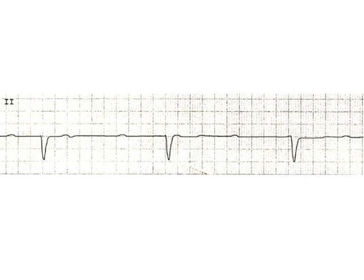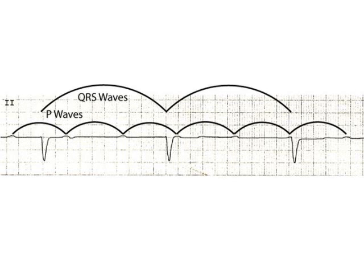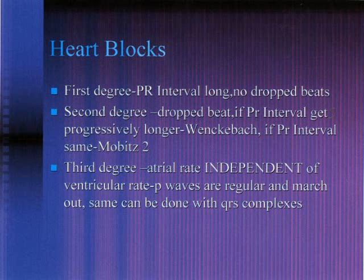The most serious block is the third degree. What happens here is the atrial rate is completely independent of the ventricular rate. As we look at the example and march out both the P waves and the QRS waves, there is no pattern between them — the P does not come in front of the QRS in any particular pattern or interval. They are completely independent, and that is the hallmark of the third degree block. This often requires a pacemaker. Heart blocks are often like burns: a first degree burn is not as serious as a third degree burn, and with heart blocks it's the same analogy.